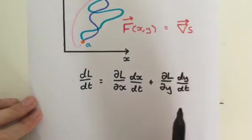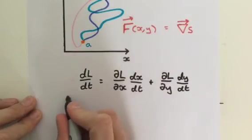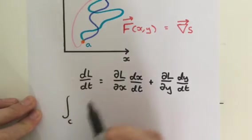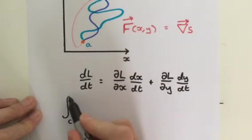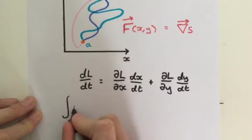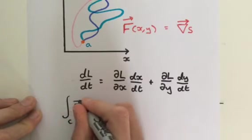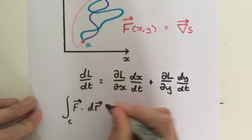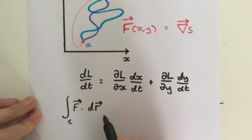So when we take the line integral, we know that we have a curve C. In this case, it doesn't matter which curve we have, it's just any curve. Our vector field F, and we dot it with dr. So we need dr.